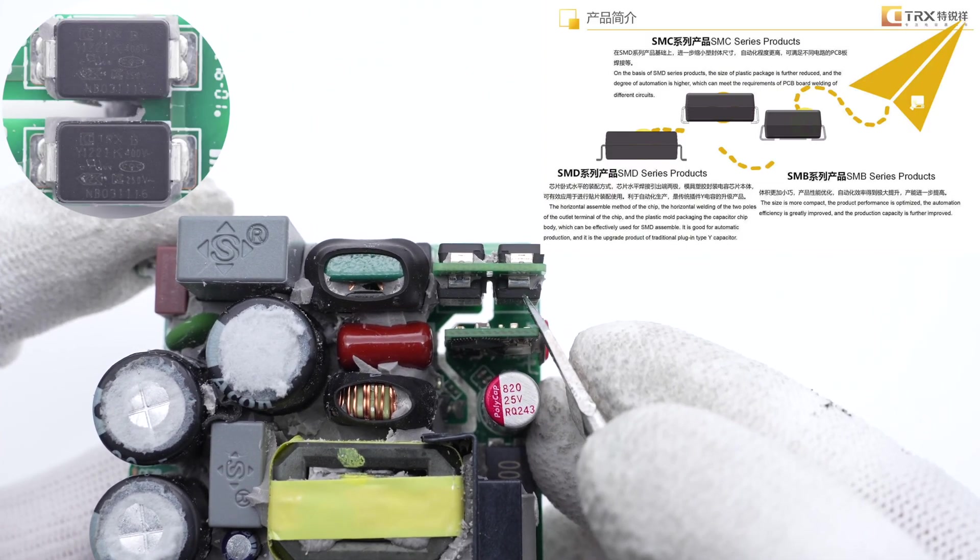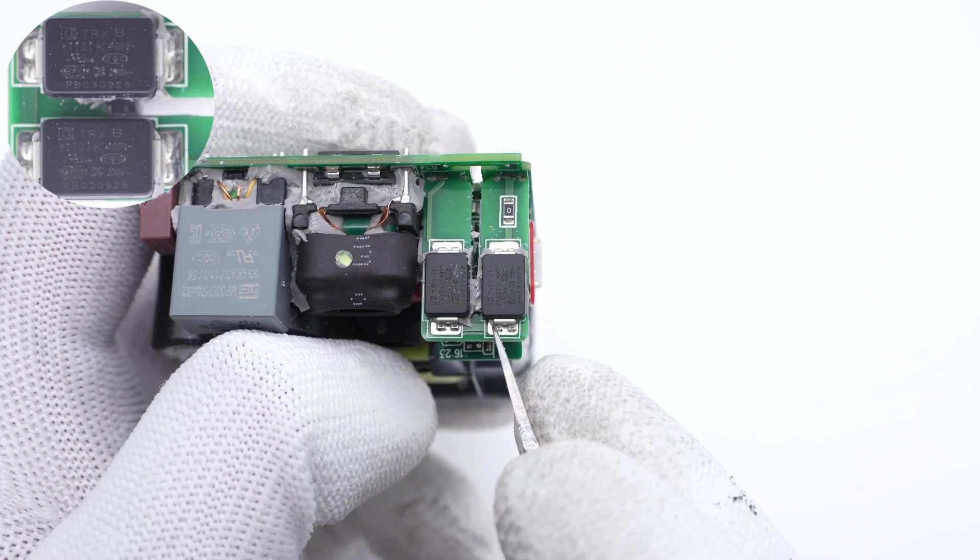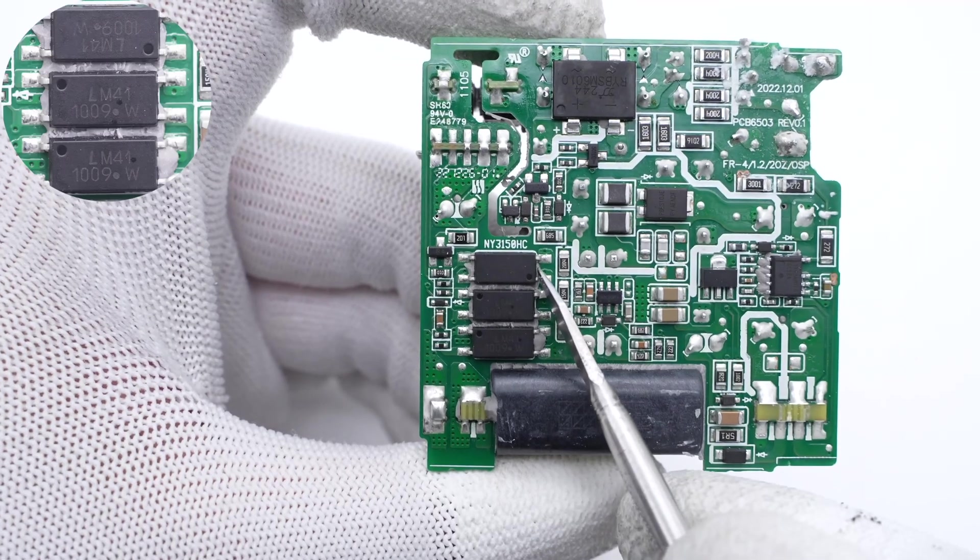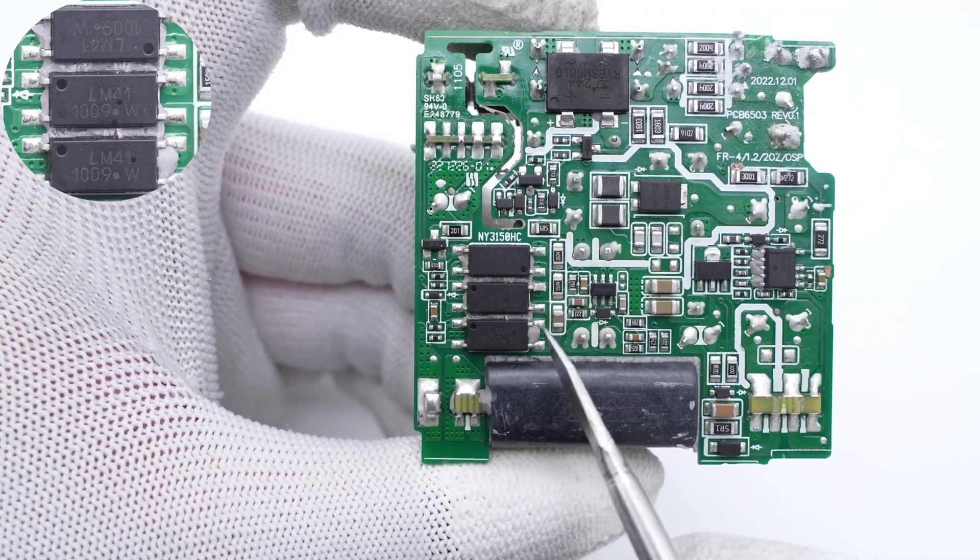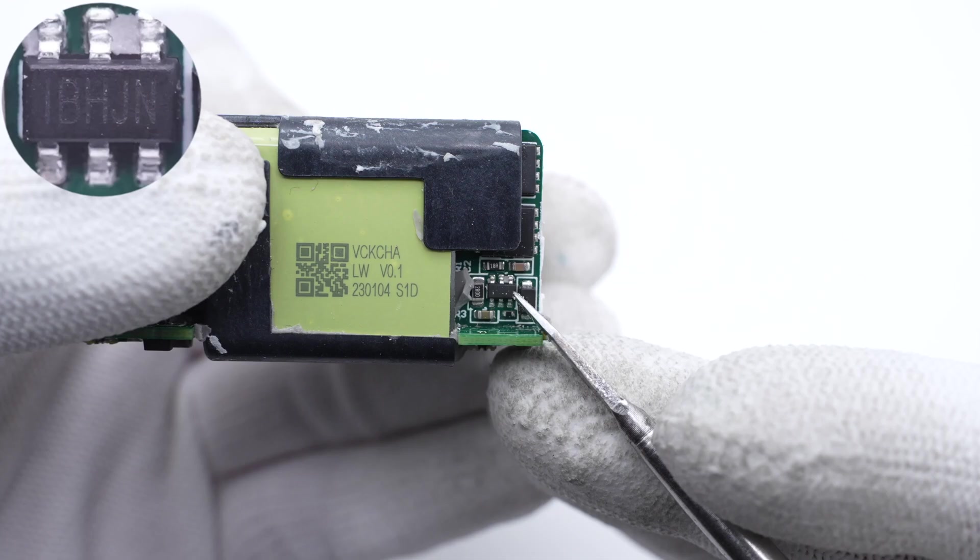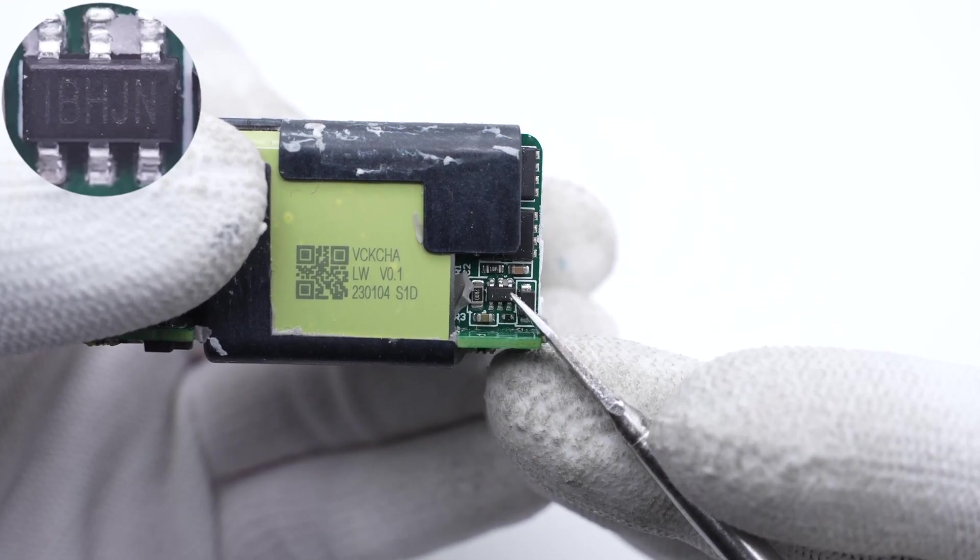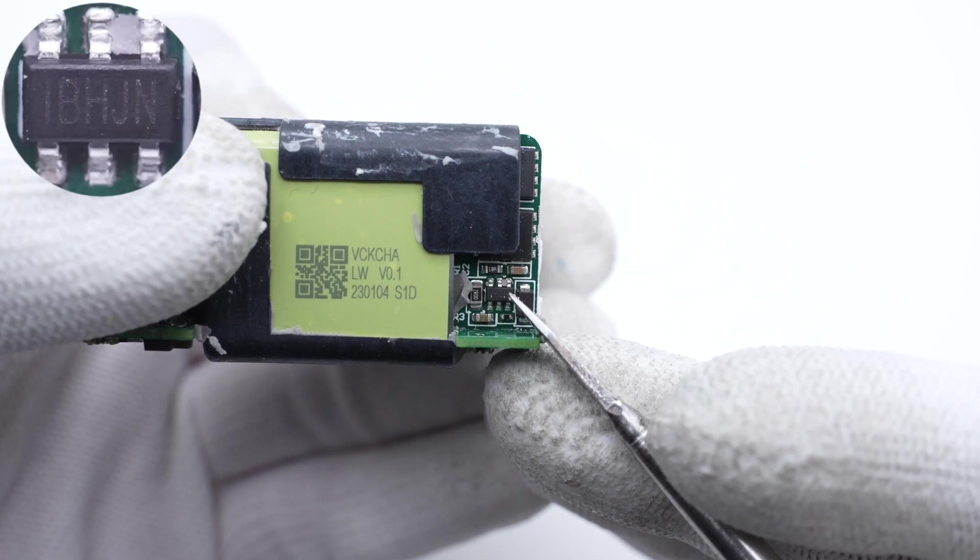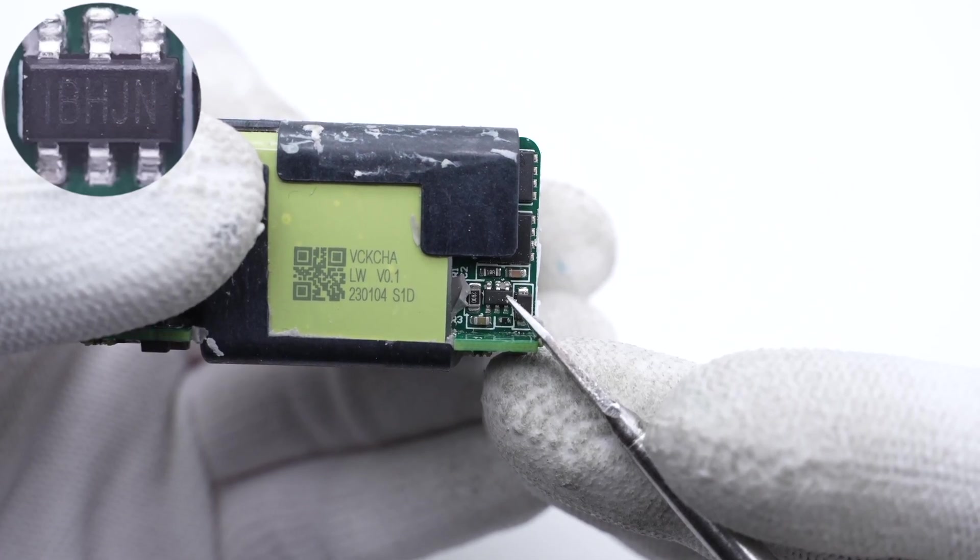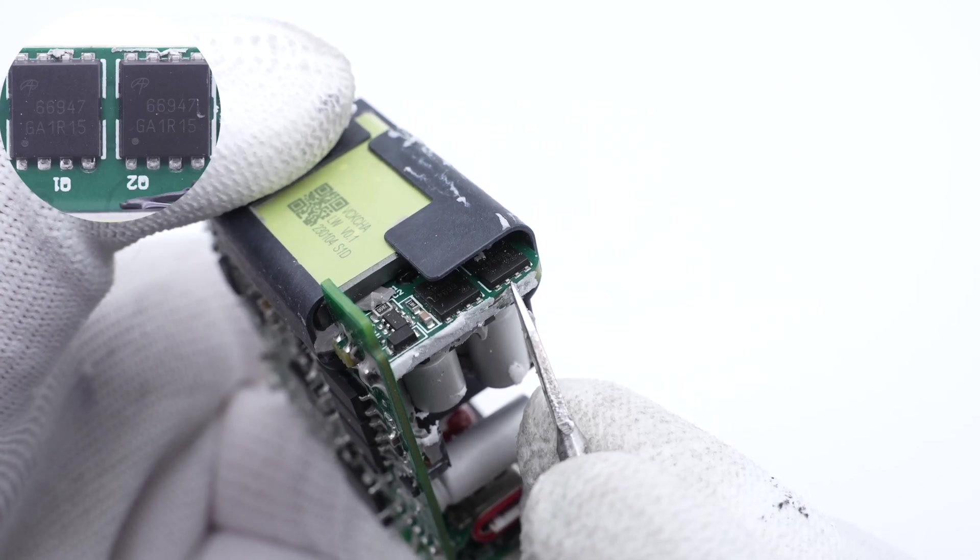Those two MLCC capacitors are from TRX. And the other two MLCC capacitors are also from TRX. Those three optocouplers are used to regulate the output voltage. The synchronous rectification controller is next to the planar transformer, from MPS. It integrates ringing detection to prevent it from turning on falsely under DCM and QR operation. Two synchronous rectifiers are connected in parallel, from AOS.